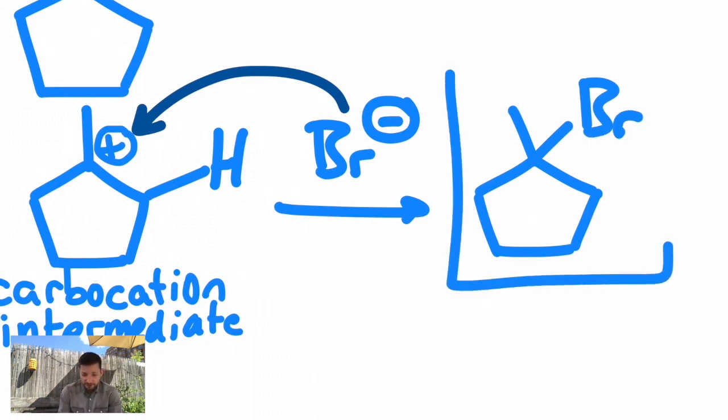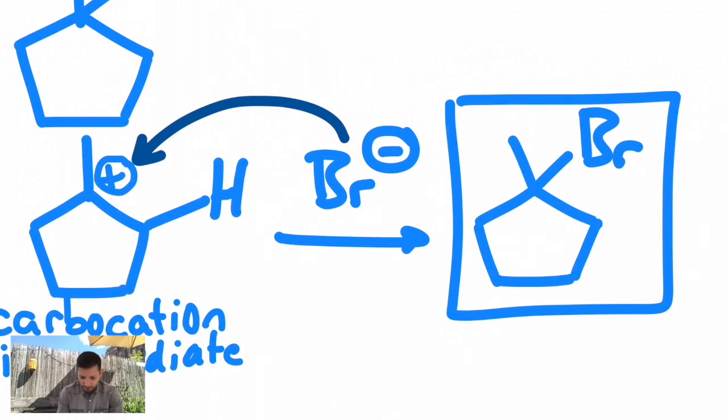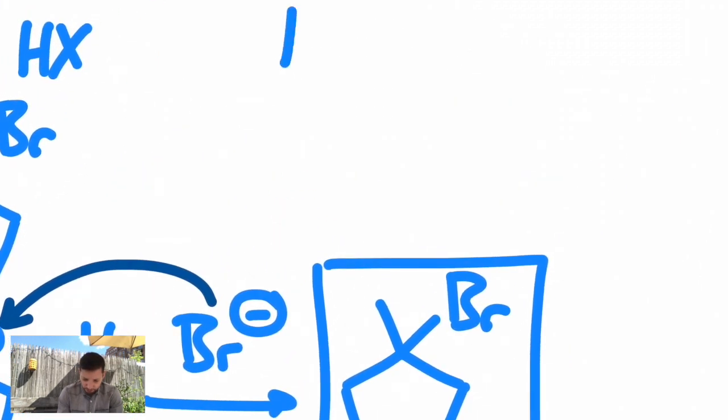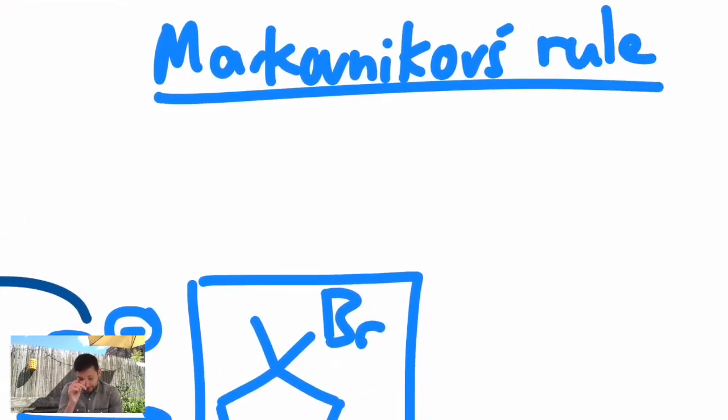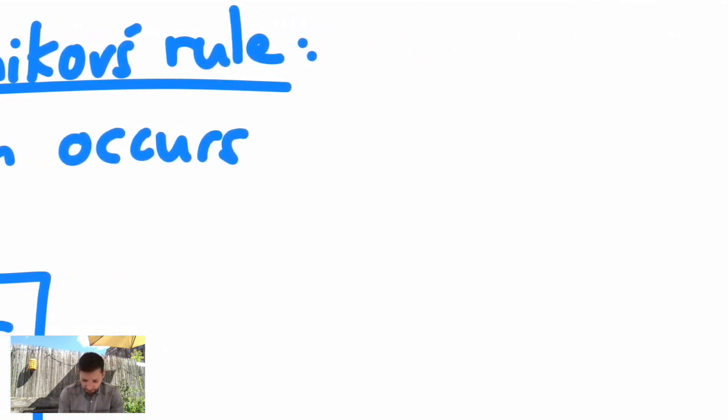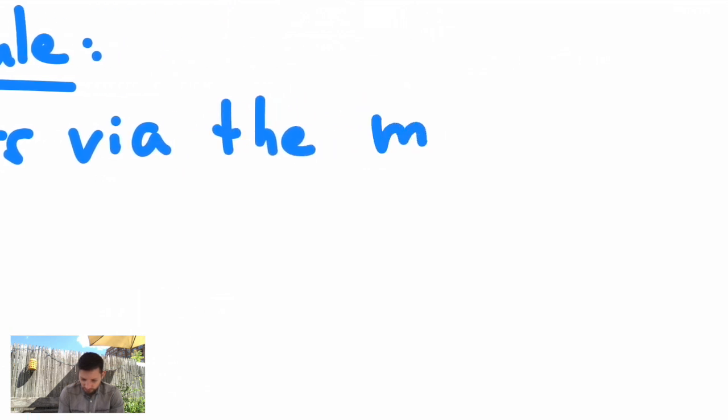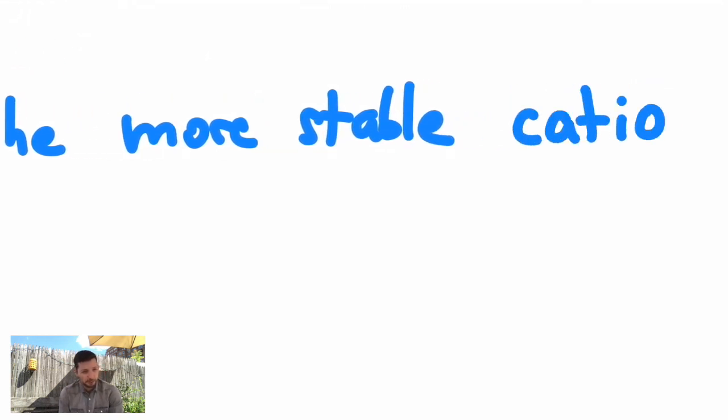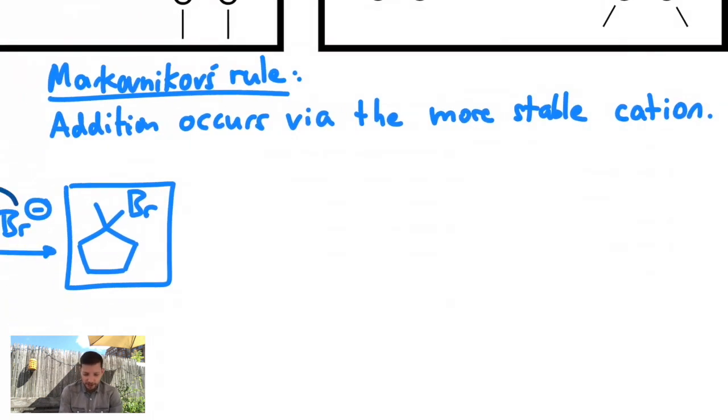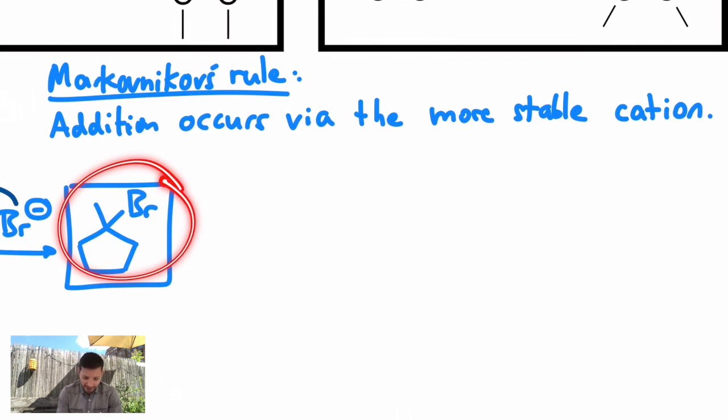And this brings up a very meaningful, fundamental rule that we will see in this course called Markovnikov's rule. Markovnikov's rule dictates the outcome of addition reactions, and I'm going to simplify what many textbooks write: addition occurs via the more stable cation. The H will go to the less substituted carbon, and the bromine goes to the more substituted carbon.